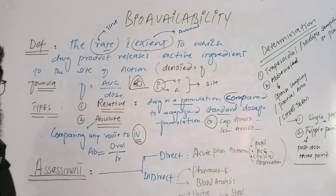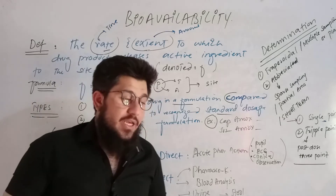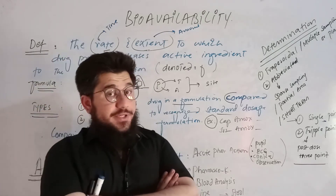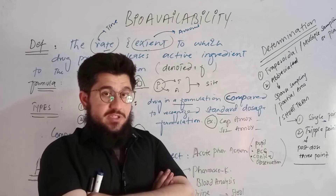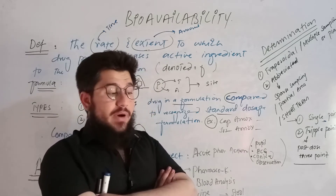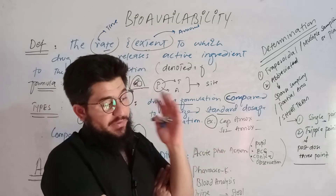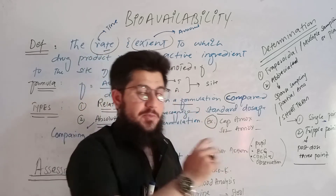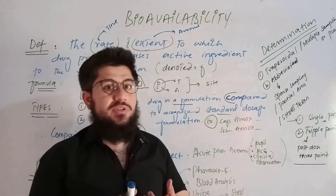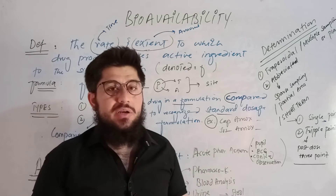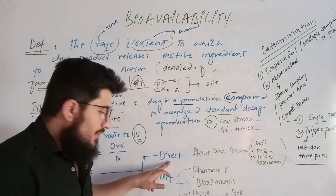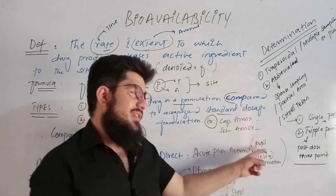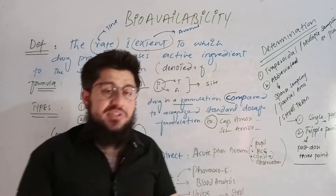Now let's come to assessment — how to assess bioavailability. We have two methods: direct and indirect. In the direct method, I observe the patient directly before and after administering the drug. For example, I observe pupil size, ECG, and clinical observations before indicating the drug, and then observe them again afterward. If a patient presented with pain and I administered a drug and the patient was relieved, that is direct assessment of bioavailability.